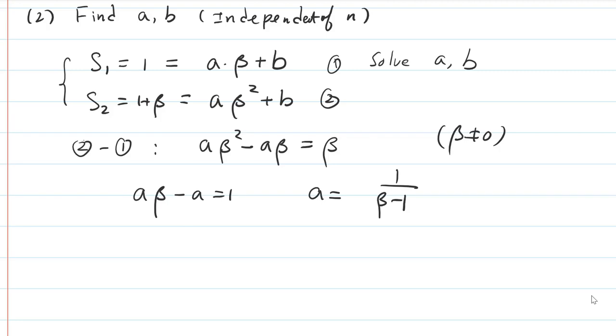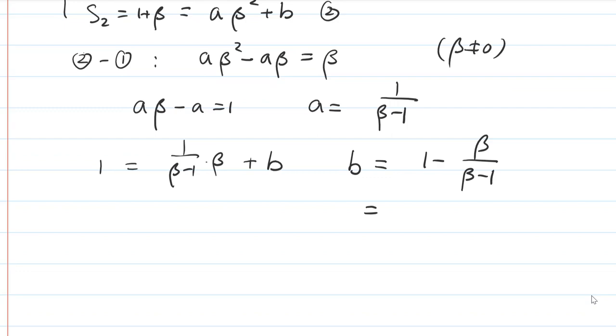And then we plug in the first equation. So 1 is equal to A now is 1 over beta minus 1 times beta plus B. So we calculate this. B is 1 minus beta over beta minus 1. And complete the computation so we can see a simpler form of the formula. So this is going to be beta minus 1, beta minus 1, minus beta. And that's going to be negative 1 over beta minus 1.